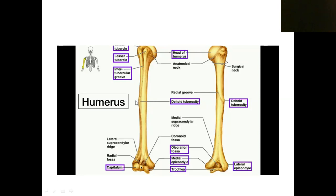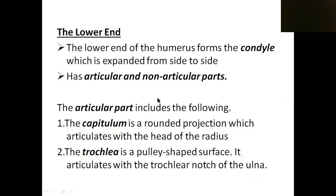The deltoid muscle inserts into the deltoid tuberosity, which is why it is named so. To summarize the shaft: it has three borders and three surfaces. The posterolateral surface has the radial sulcus, and the anterolateral surface has the deltoid tuberosity.